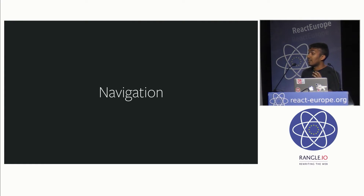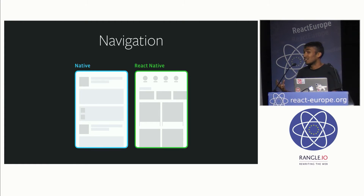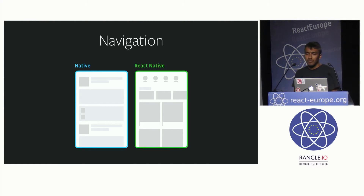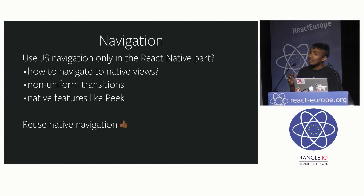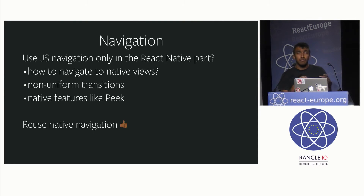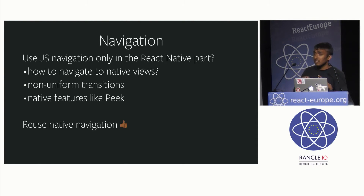The first main thing people think about is navigation — simply put, going from any two screens in your app. They could be native to React Native, React Native to native, any of those integration points. When you're first thinking of how to bring React Native into your app, you're probably just imagining using JavaScript to do all the navigation within the React Native part. But you end up with bigger questions, like: how do I navigate to a native view from a React Native one, and how do I handle transitions between React Native screens?